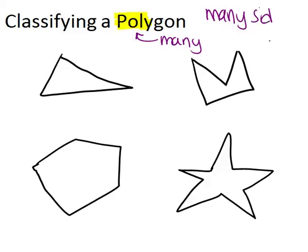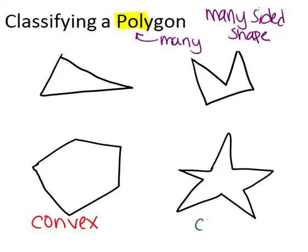It's a generic word to represent all shapes that have multiple sides. All four shapes in this diagram are polygons, but there are actually two different types of polygons here. The ones on the left are convex polygons, and the ones on the right are concave polygons.